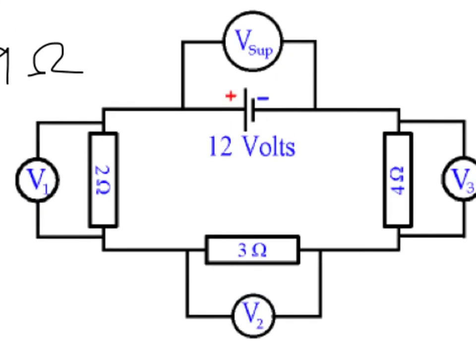Those 1.33 amps are the same throughout the entire circuit. If you are supplying 1.33 amps of current out of your battery, that 1.33 is consistent throughout — it does not increase or decrease when it encounters resistors or bare wire. It's like a train that travels at the same speed throughout.